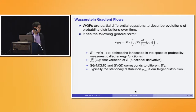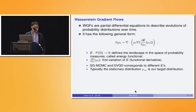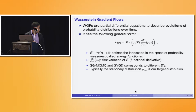This PDE has a simple form where E is an energy functional that maps probability measures to a real value — essentially equivalent to the landscape we described. The term delta E / delta mu is known as the first variation of functional E, which we can consider as the gradient or direction of particle flow.